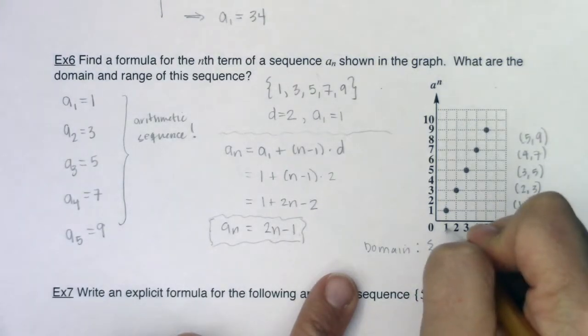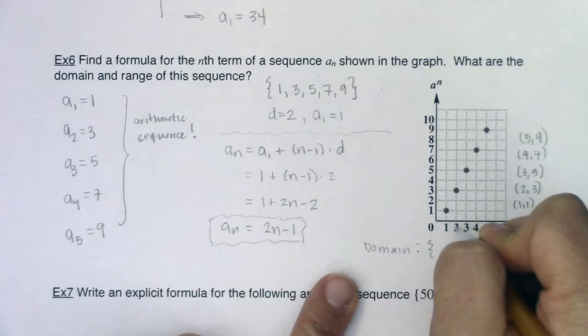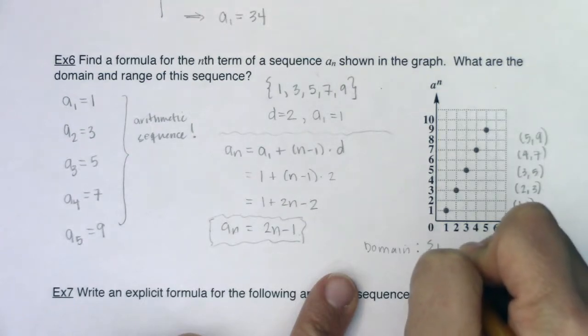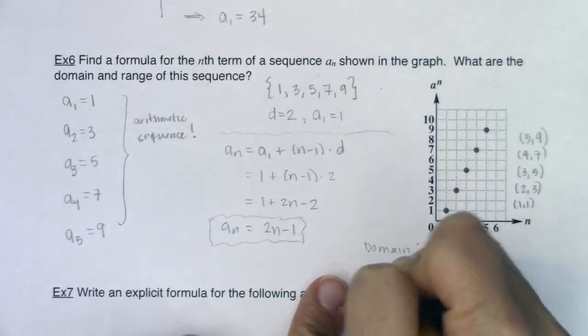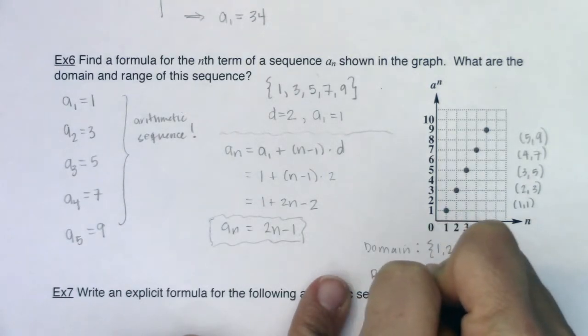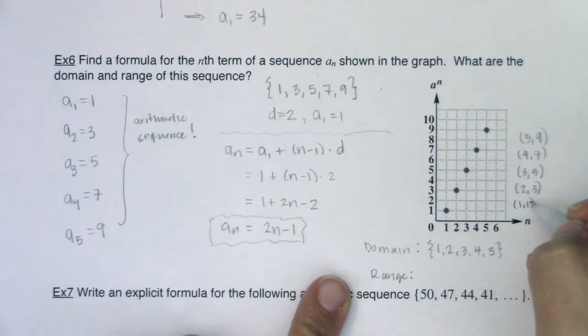I'm just going to make a list of numbers and the domain values were literally 1, 2, 3, 4, 5. And then the range, if we look at the y values, it was 1, 3, 5, 7, 9.